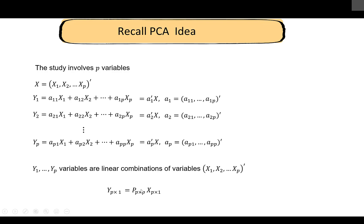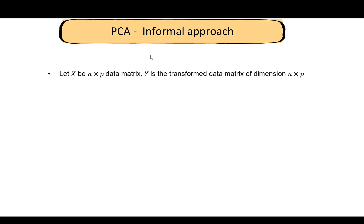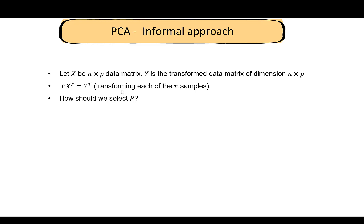We can rephrase this problem more concisely: the y vector is the transformed data, and the goal is to determine matrix P, which is p×p. The first row of P is a1, the second row is a2, and so on. For an actual dataset, X is the n×p data matrix and Y is the transformed data matrix, also n×p. We are transforming each of the n samples.